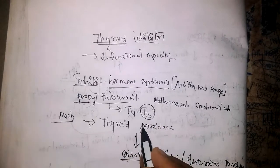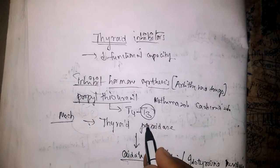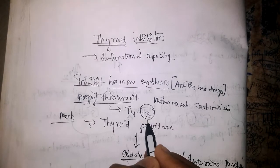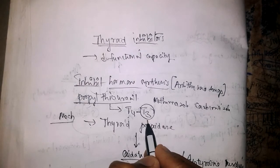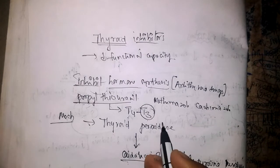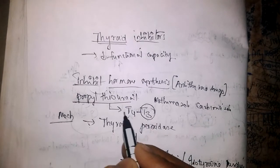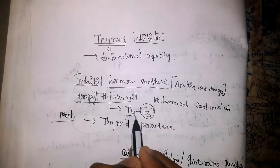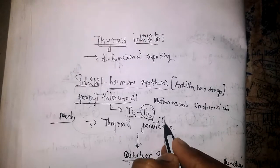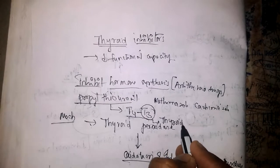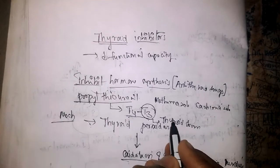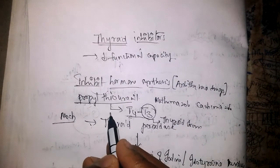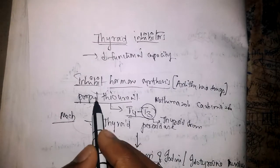Propylthiouracil inhibits the peripheral conversion of T4 to T3. T3 is the functional form of thyroid hormone. As propylthiouracil inhibits conversion of T4 to T3, the function of thyroid hormone will come down. For this reason, propylthiouracil is preferred in thyroid storm.